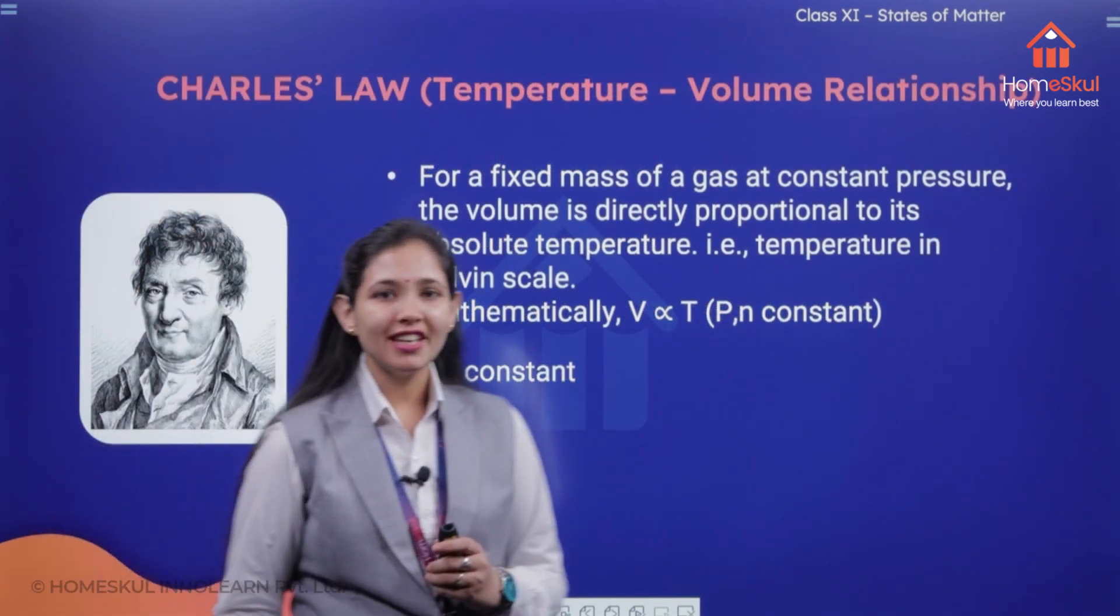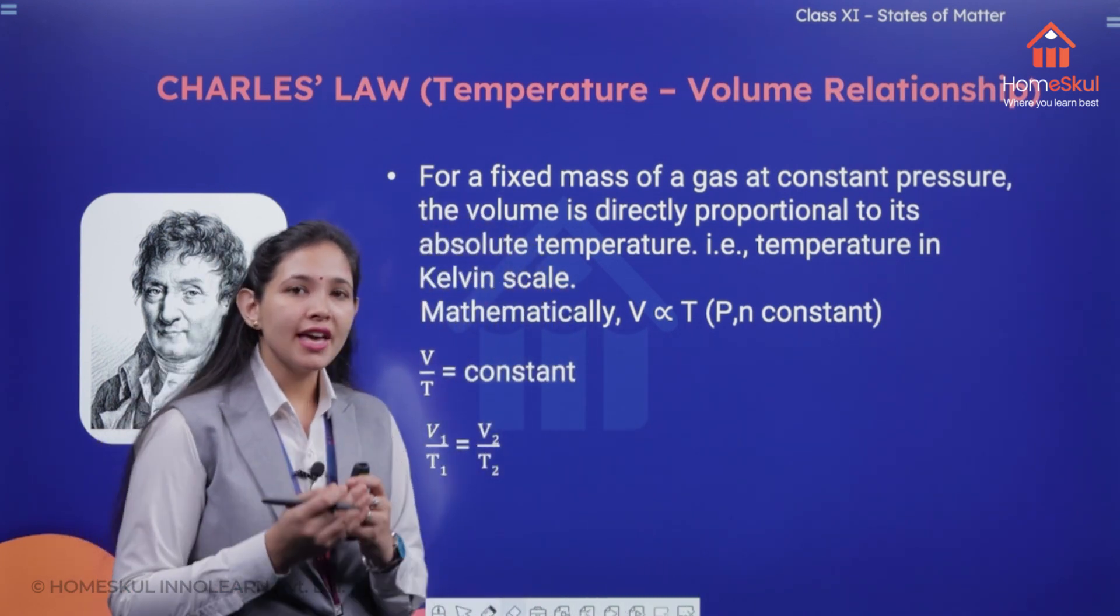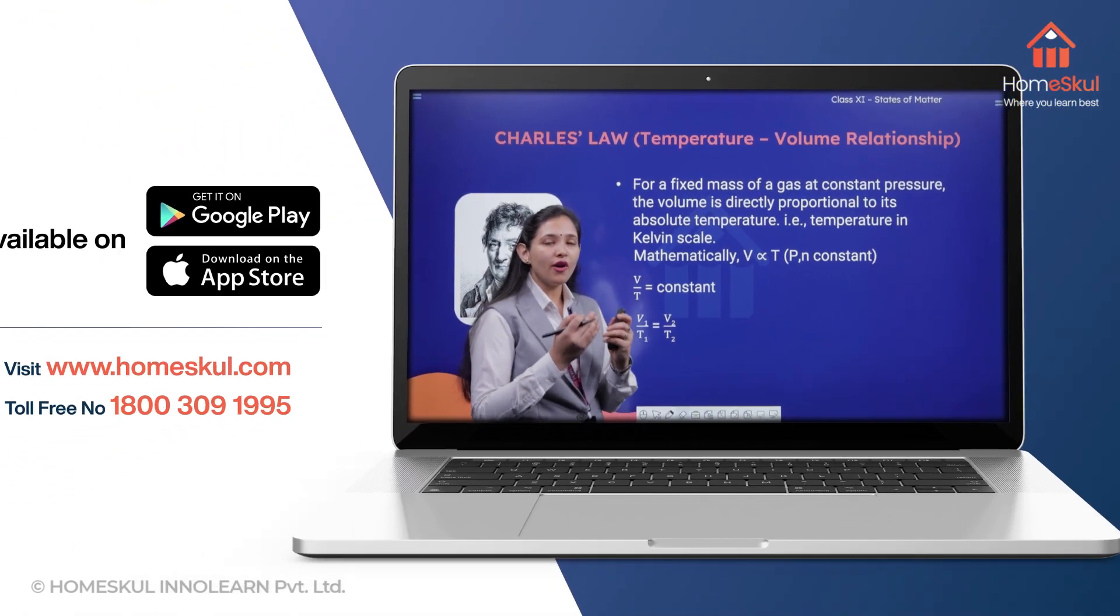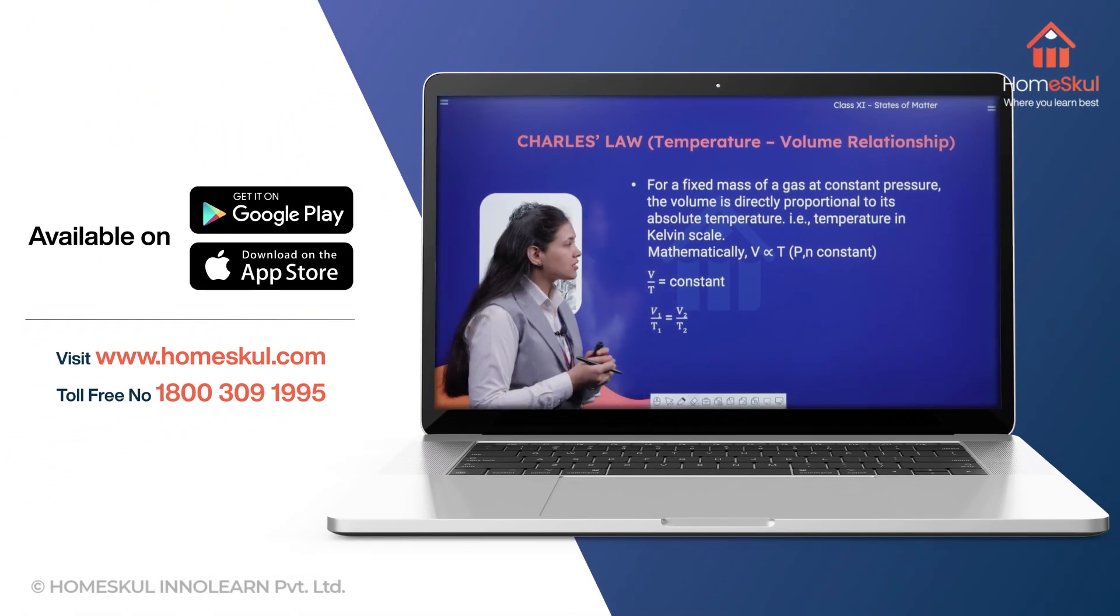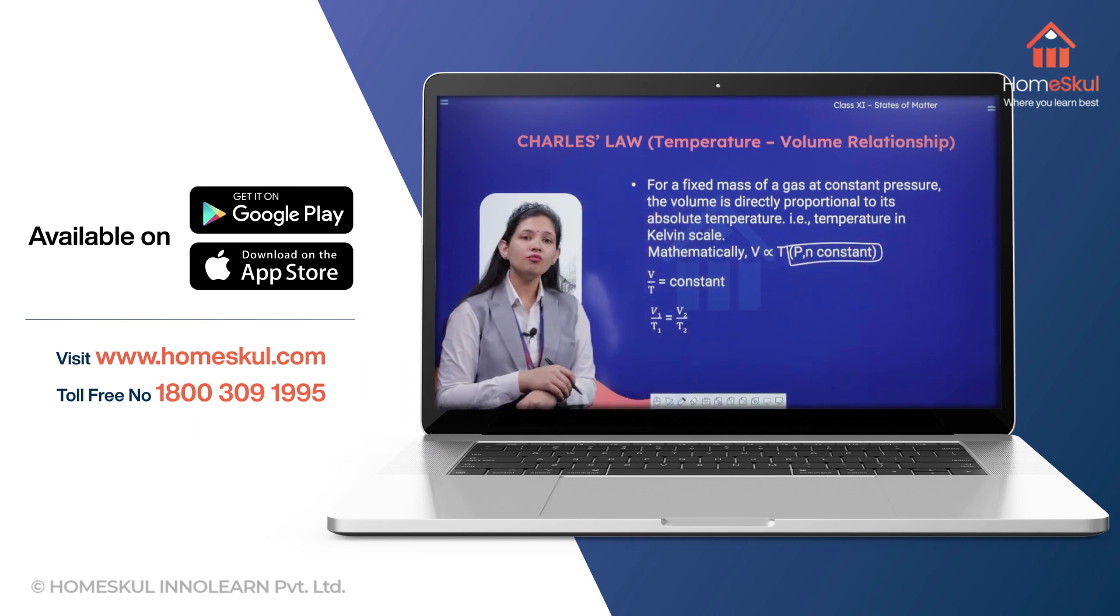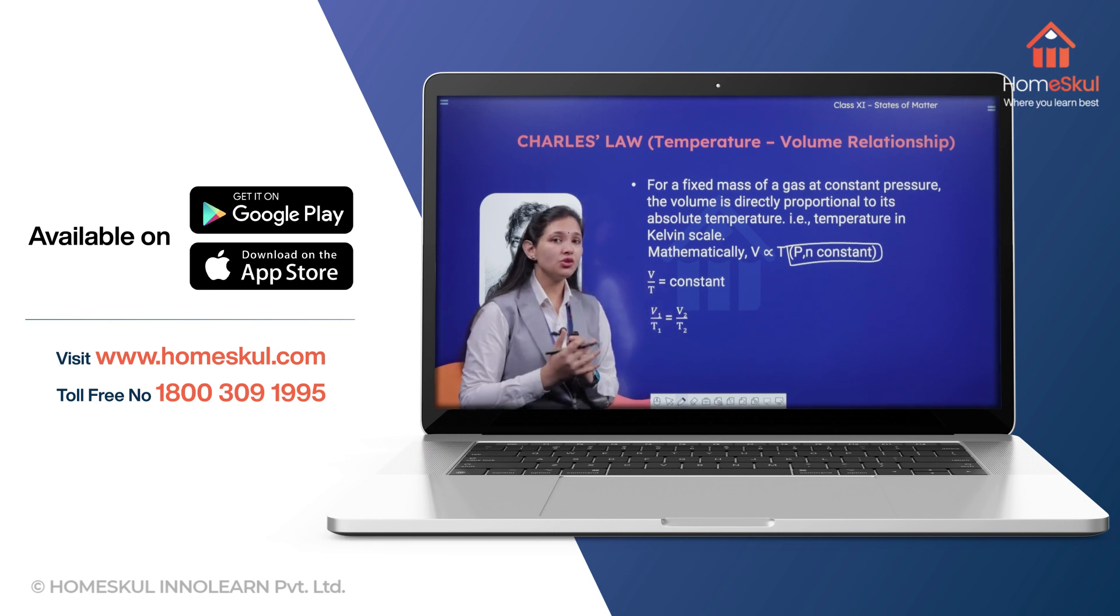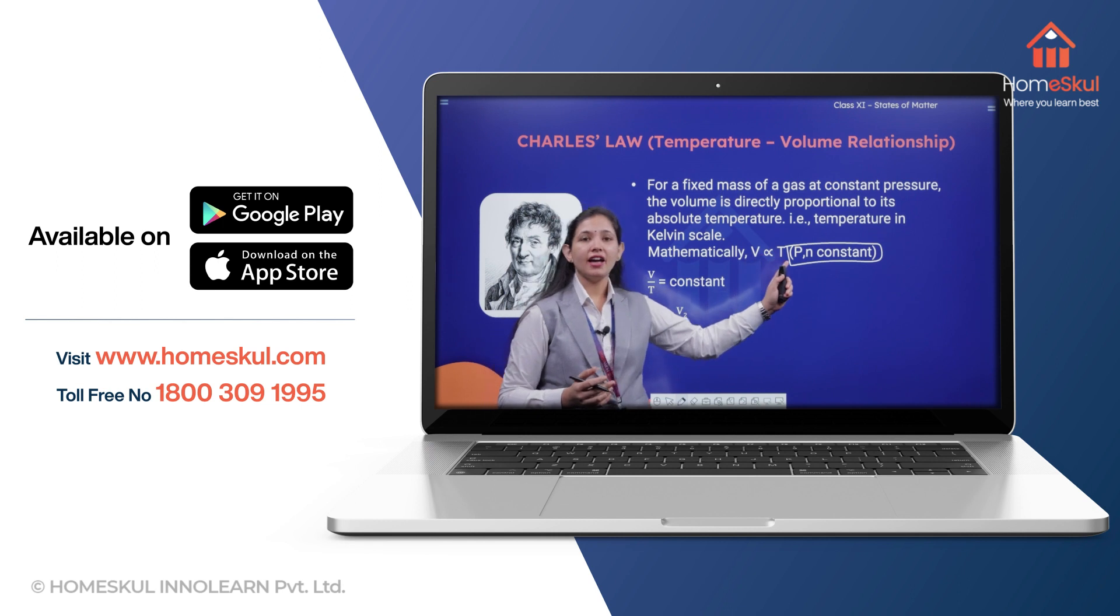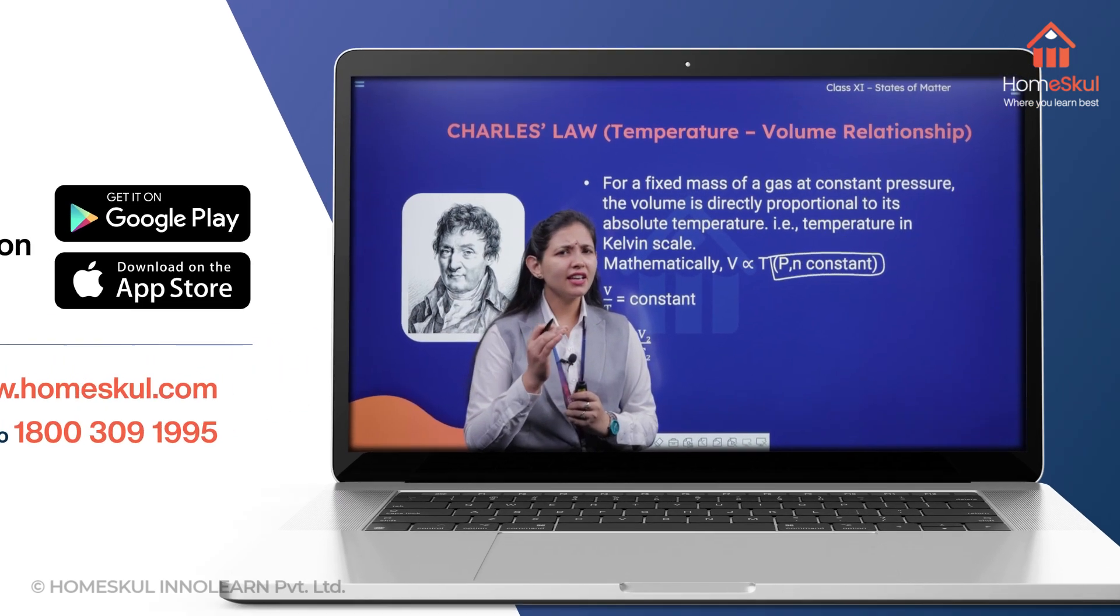So here you can see Charles here. And what are all things which he has told for a gas? The first thing that he just took these two things that is pressure and number of moles as constant for a gas and he took out the relation for V and T that is volume and temperature for the gas and he gave his law.